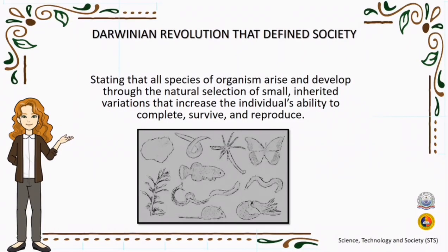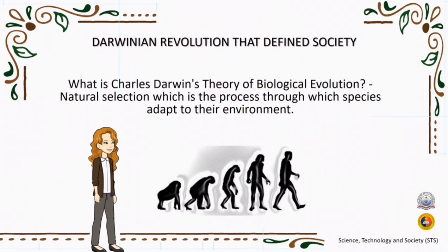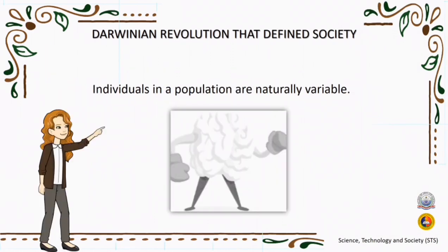You may wonder how it is done or how it is created. In order for us to understand the theory of Charles Darwin, let's talk about natural selection. Natural selection is the process through which species adapt to their environments. It is the engine that drives evolution. Natural selection is the process through which populations of living organisms adapt and change. Individuals in a population are naturally variable, meaning they are all different in some ways. This variation means that some individuals have traits better suited to the environment than others.